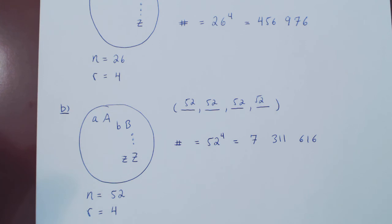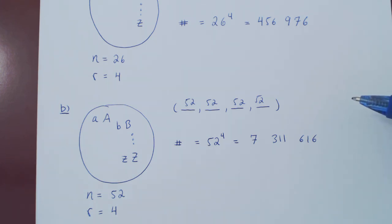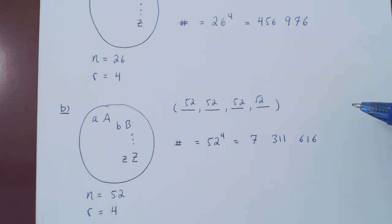In the next videos, we'll consider different setups where sometimes we'll go from ordered to unordered, and sometimes with to without replacement. Whenever you have a counting problem, always ask yourself those two questions: is the selection ordered or unordered, and is it with or without replacement? Once you answer those two questions, you'll know which setup you're in and how to count the total number of ways of selecting your elements.